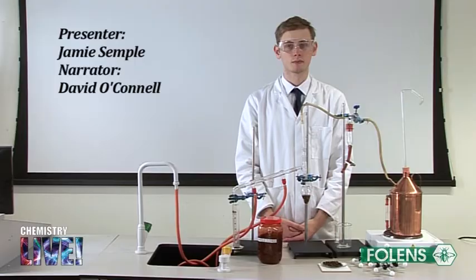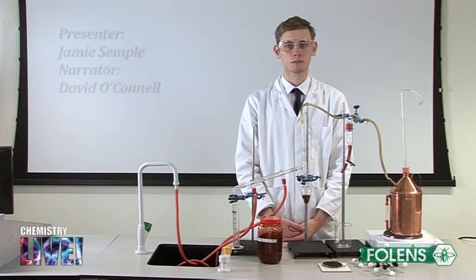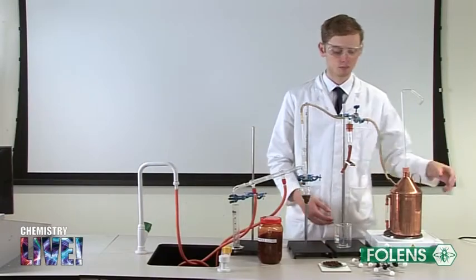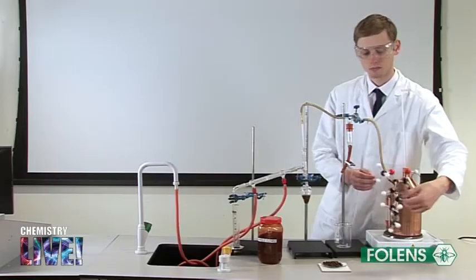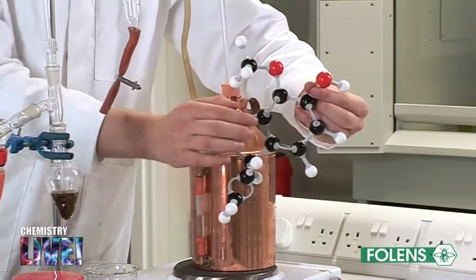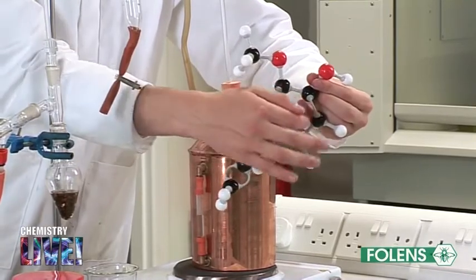Experiment to extract clove oil from cloves by steam distillation. In this experiment, steam distillation is used to extract clove oil from cloves. The main constituent of the oil found in cloves is a substance called eugenol. This is an aromatic compound containing a benzene ring.